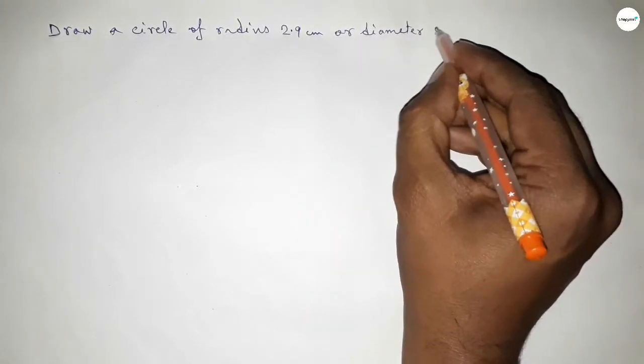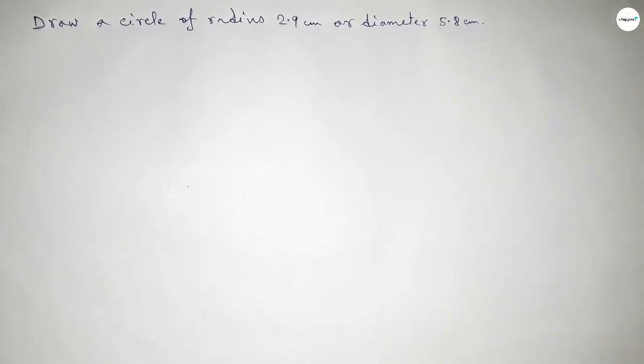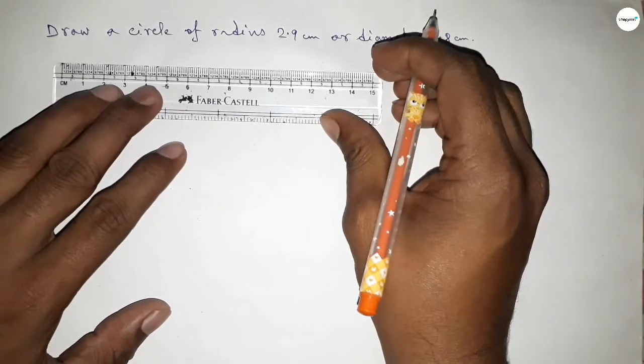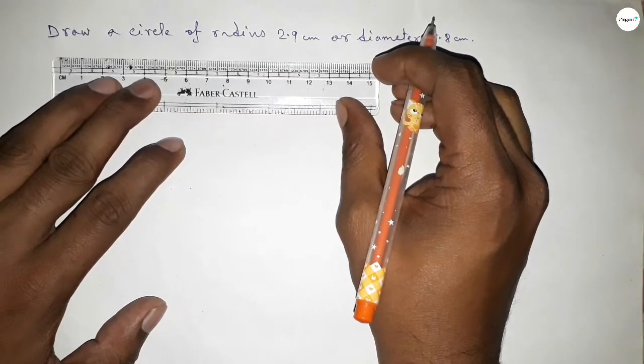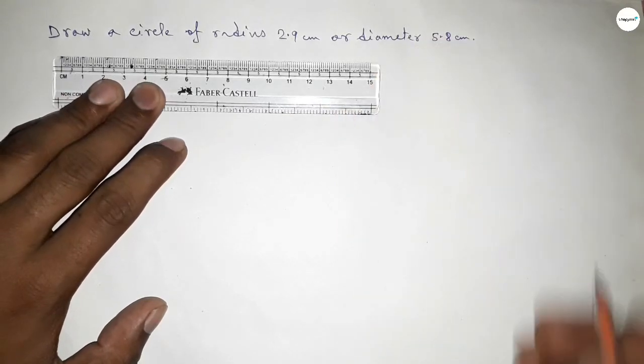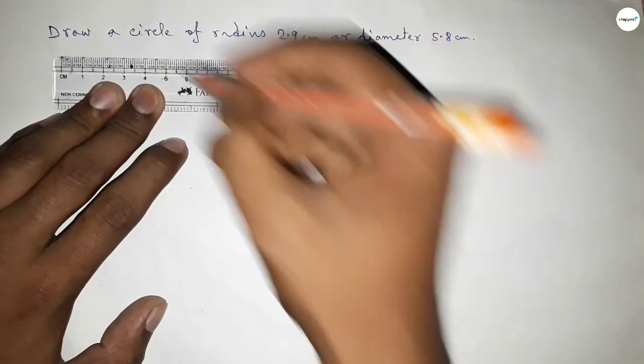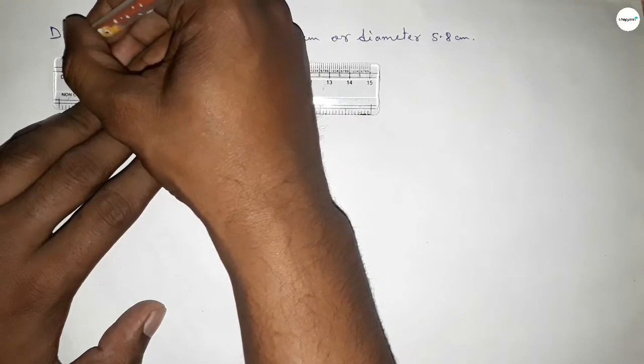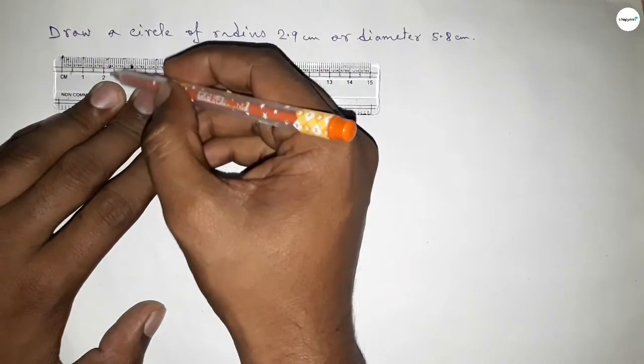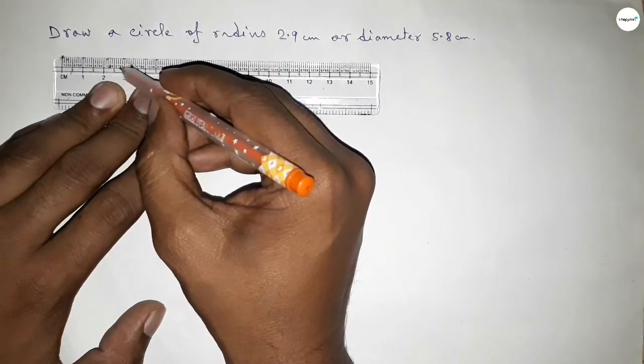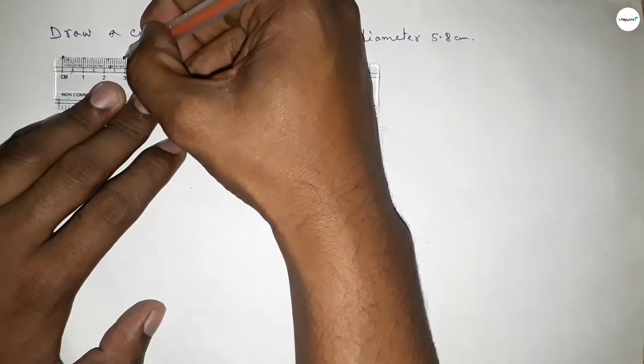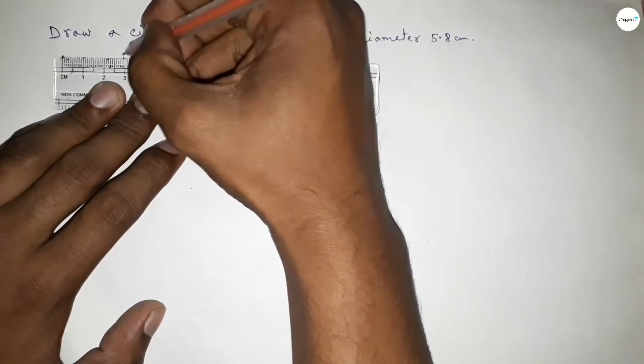So let's start the video. First of all, drawing here the radius 2.9 centimeter. This is starting zero, one, two, five, two point five, six, seven, eight, and this is nine, so 2.9 centimeter.